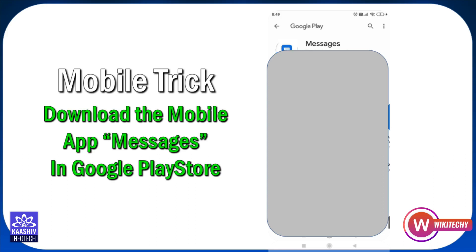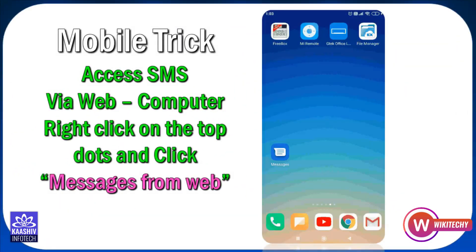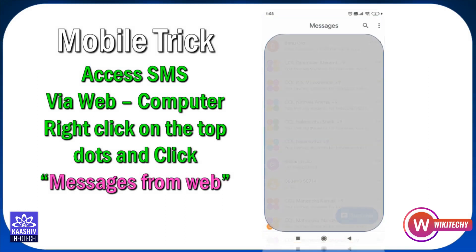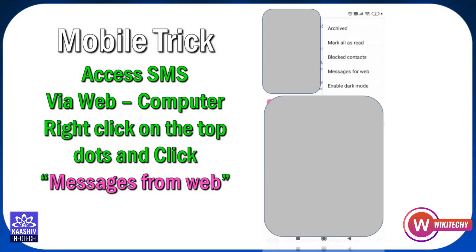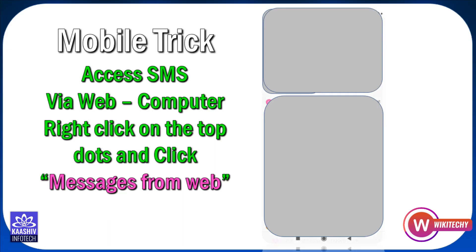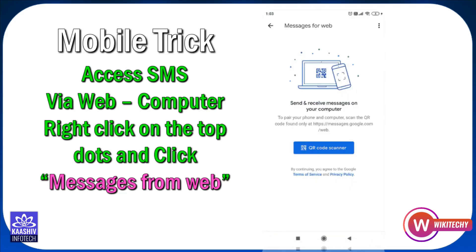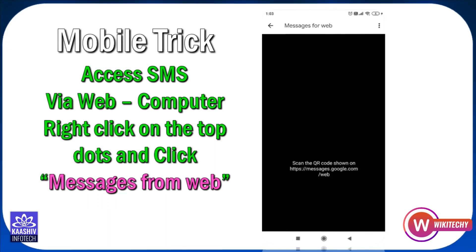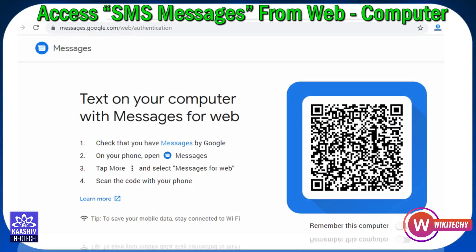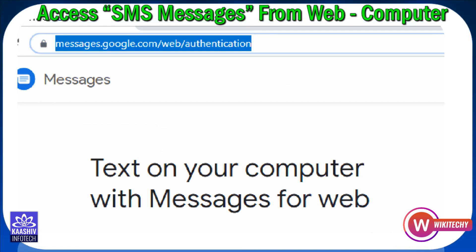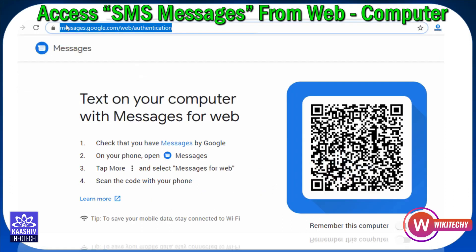Okay, so you can go to apps and click. Open messages from web, click automatically. A QR code scanner will appear — link the link. Go to messages for web, so google.com. In the messages, click messages and scan.